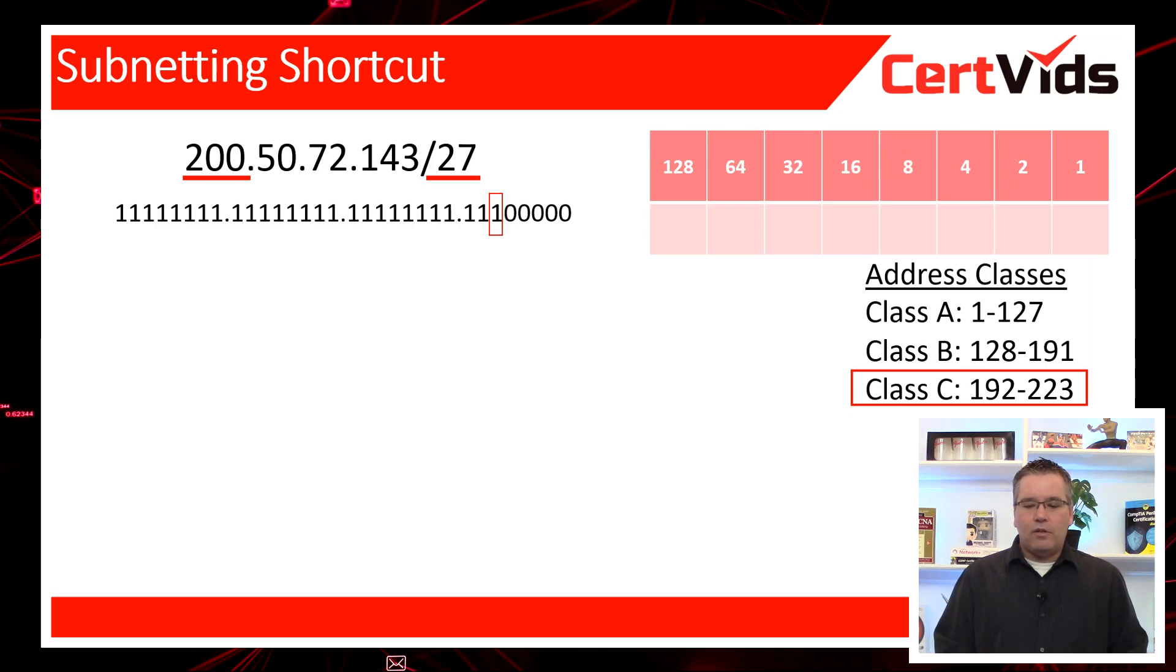So then what you do is you look at, what's the value of that bit? The value of that bit is 32. So 32 becomes the increment value that we can use to calculate each of the network IDs in this subnetted example.